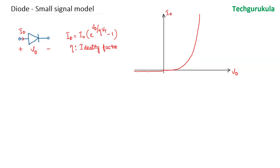The current-voltage characteristics are shown here. In reverse bias, it is a reverse saturation current flowing which is fairly independent of the voltage across the diode. In forward bias, the current is increasing exponentially as we increase the voltage across the diode. So the first thing we notice is that the IV characteristics of a PN junction diode are non-linear.